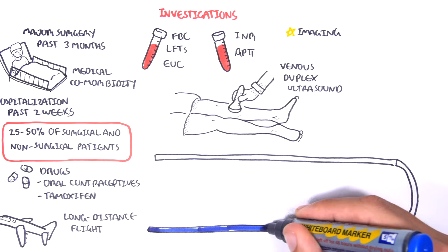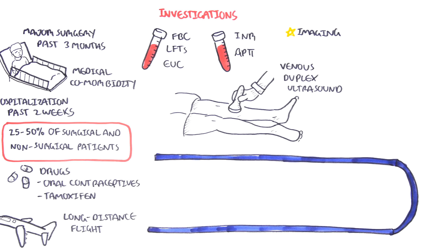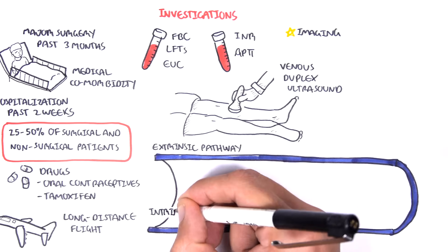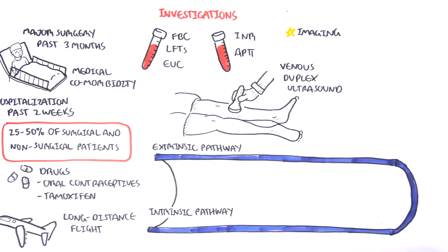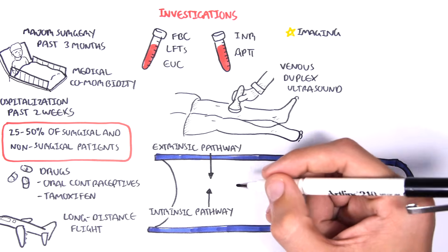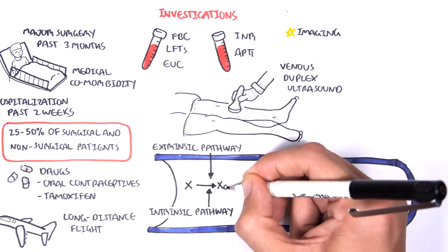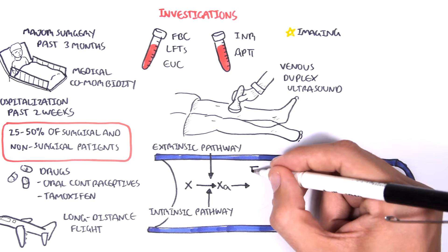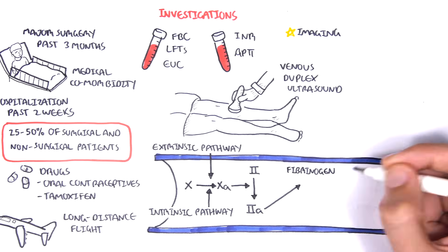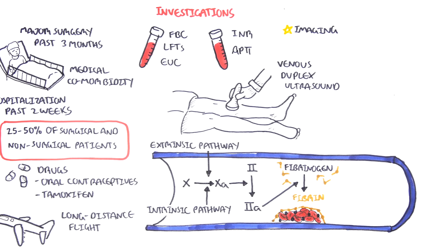There is another investigation that can be done based on the coagulation cascade. Let us briefly go through the coagulation cascade. There are two pathways in the clotting cascade or coagulation cascade which is the extrinsic pathway and the intrinsic pathway. Both the extrinsic pathway and the intrinsic pathway will lead to a common pathway which is activation of factor 10 to factor 10a. 10a in turn activates factor 2 or prothrombin to factor 2a which is known as thrombin. Thrombin then activates fibrinogen to fibrin. Fibrin forms the basis of the fibrin mesh and is the last step in the formation of the thrombus.